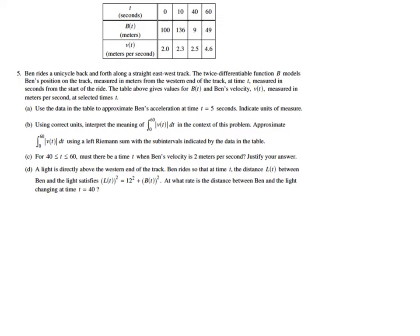using correct units, interpret the meaning of the integral from 0 to 60 of the velocity function in the context of this problem. Then approximate that same integral using a left Riemann sum with subintervals indicated by the data in the table. So when we have a rate of change, and then we integrate that rate of change, that tells us how much we've accumulated.